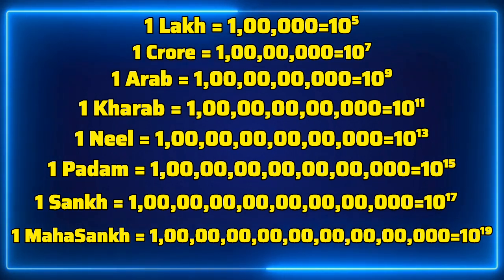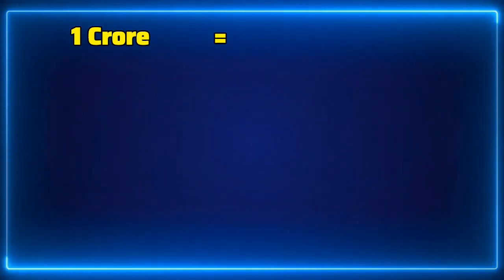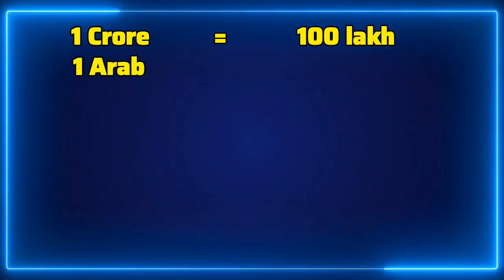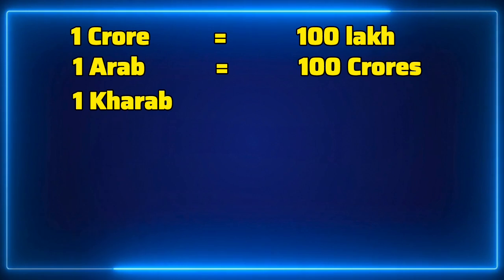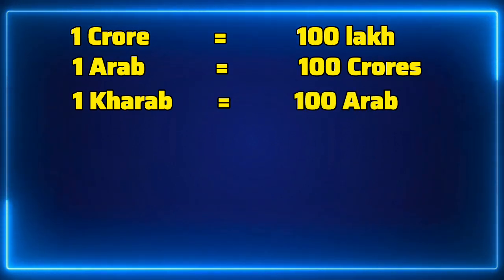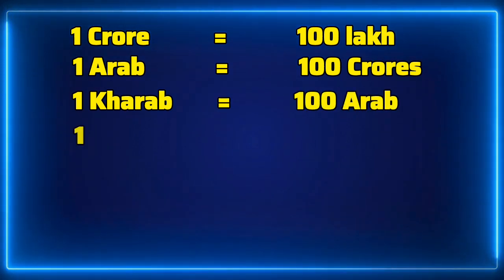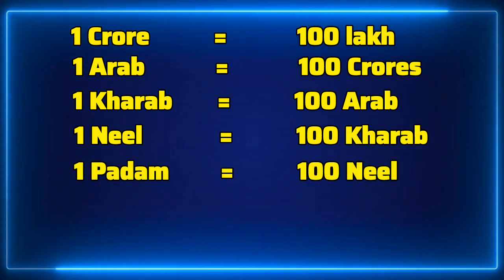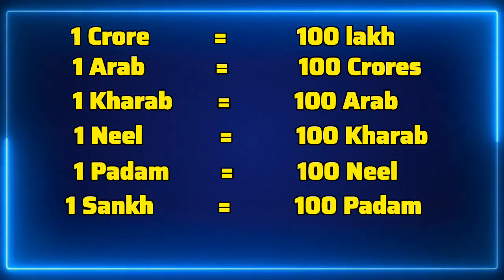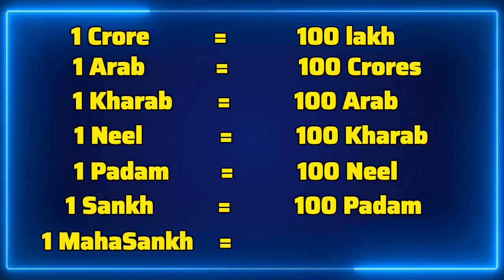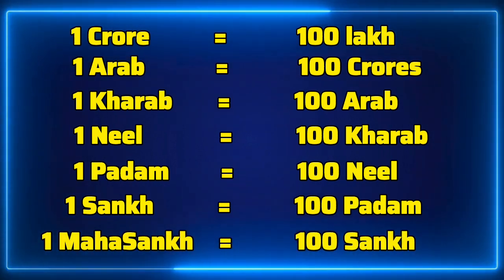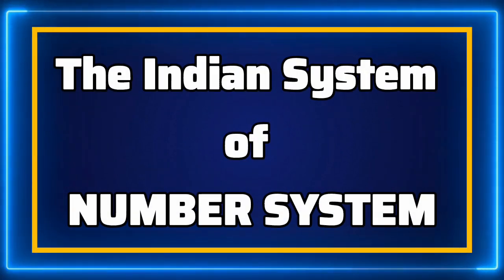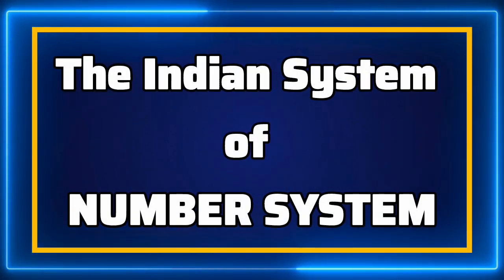To summarize: one crore is 100 lakh, one Arab is 100 crore, one Kharab is 100 Arab, one Padma is 100 Nil, one Shank is 100 Padma, and one Maha Shank is 100 Shank. This is the Indian system of numbers.